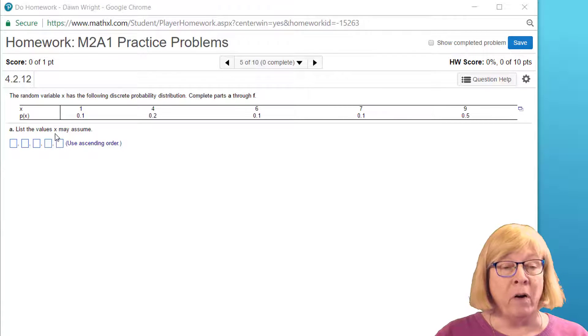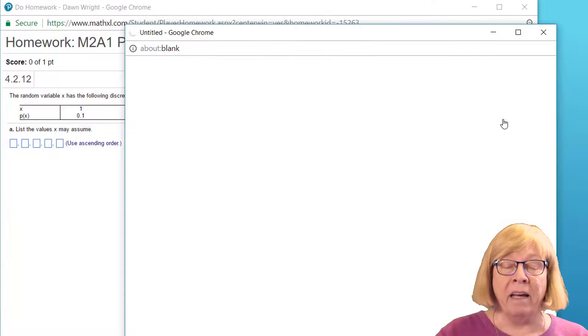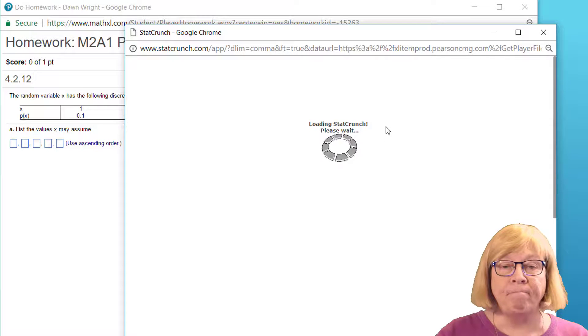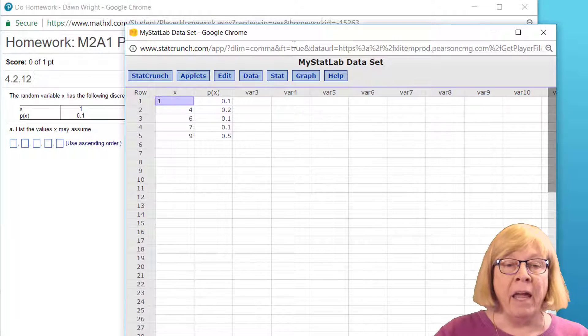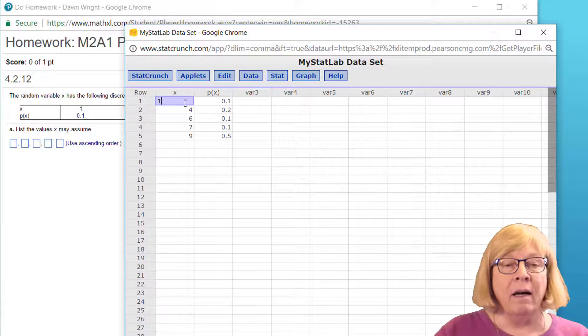The first part is pretty straightforward, but let me show you something. Any time you have a unique probability distribution, particularly a discrete probability distribution, you can use StatCrunch to really make this problem go much quicker. So I'm going to click on the little icon there. I'm going to copy this data into StatCrunch. And now we've got the data in StatCrunch, we've got a column label X and a column label P of X for the probabilities for each one of those discrete values of X.